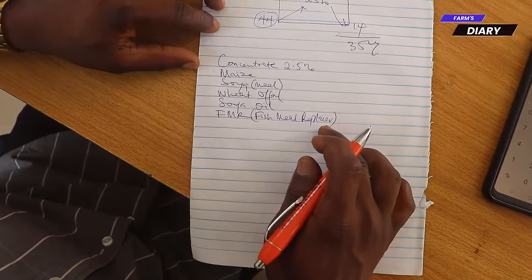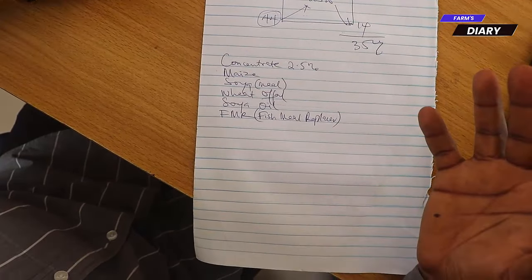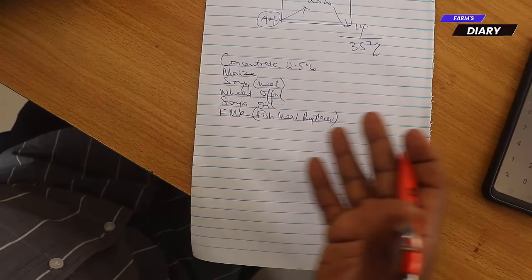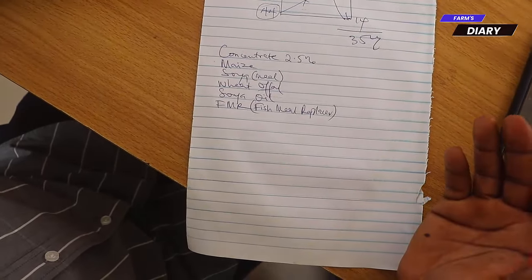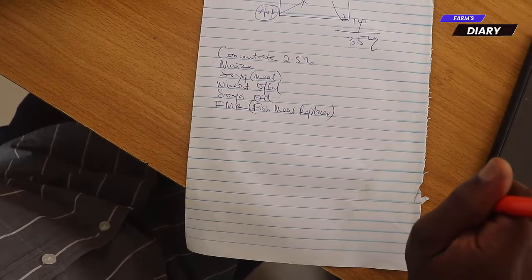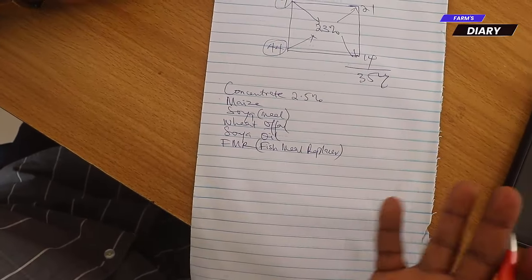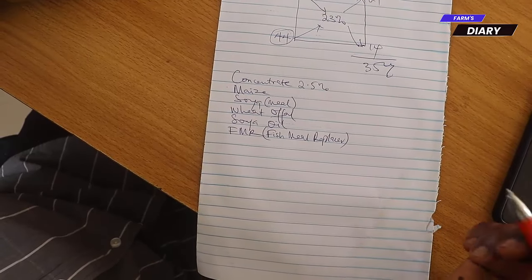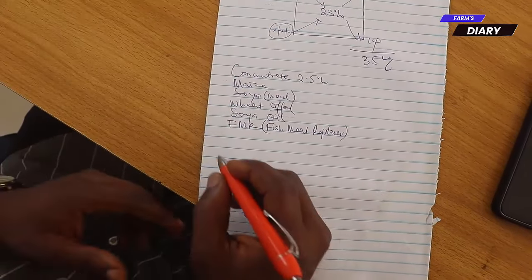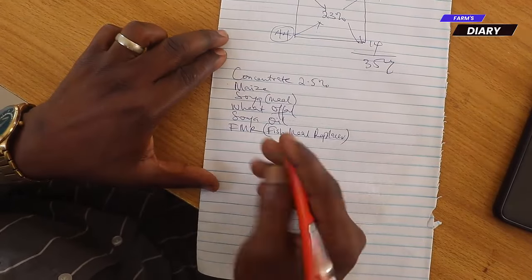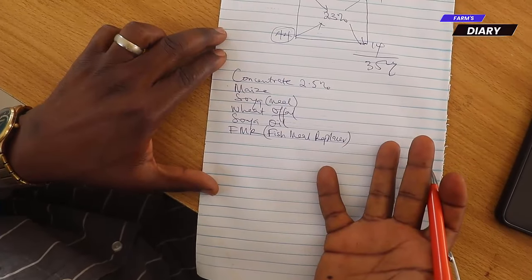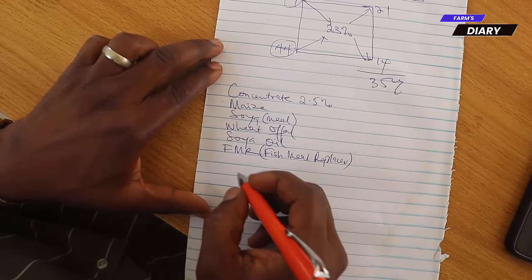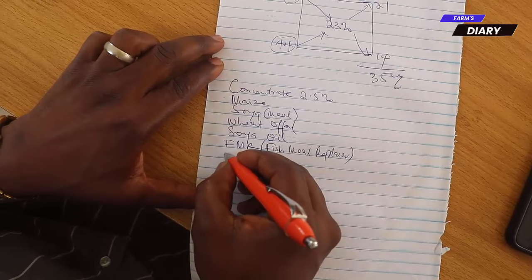And this fish meal replacer, instead of using 3 kg of the normal fish meal, the fish meal replacer will save you cost, and you use only 1 kg. What 1 kg of fish meal replacer can do is equivalent to what 3 kg of fish meal, the 72% fish meal, can do. And again, you know, we are doing this thing to also reduce the cost of production. So we also put cost-effectiveness in the feed. And again, we also add some probiotics.